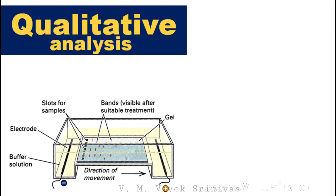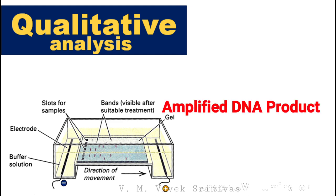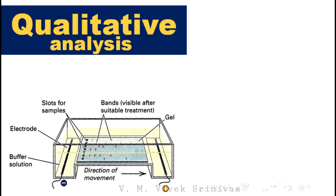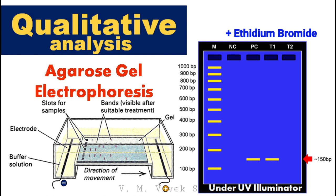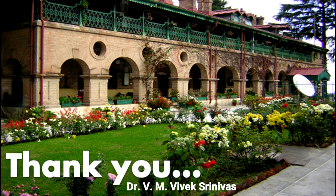Following amplification of the DNA fragment, qualitative analysis is carried out by running the amplified DNA product along with ethidium bromide DNA staining solution through agarose gel electrophoresis to visualize the DNA band. With this, we come to the end of the polymerase chain reaction. In the next video, we will discuss agarose gel electrophoresis in detail. Hope the lecture is informative and useful. Thank you.